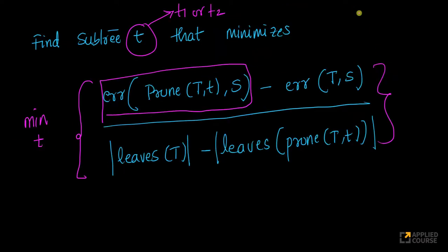First, you will plug in t1. You will plug in t equals to t1 first, then you will plug in t equals to t2. And you will compute the metric and whichever has the lower value, you will pick that.